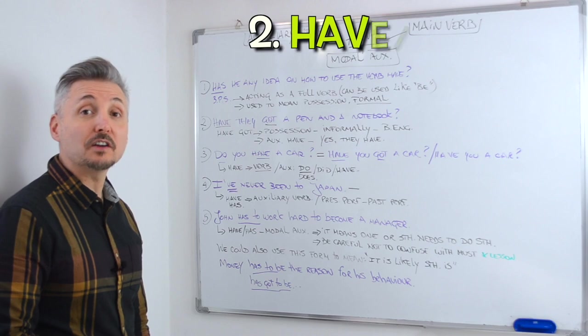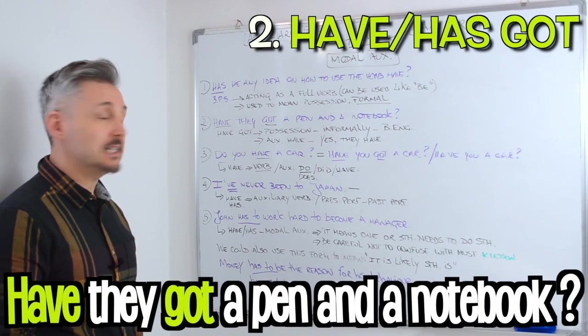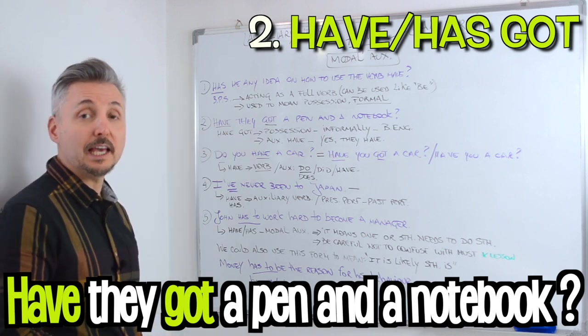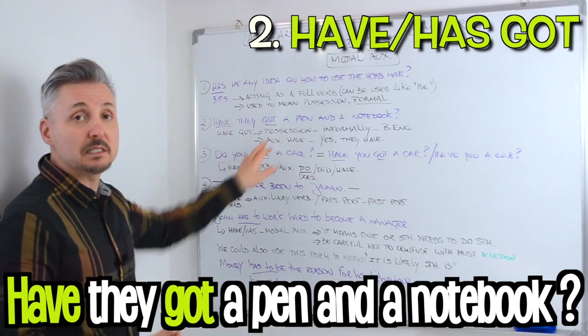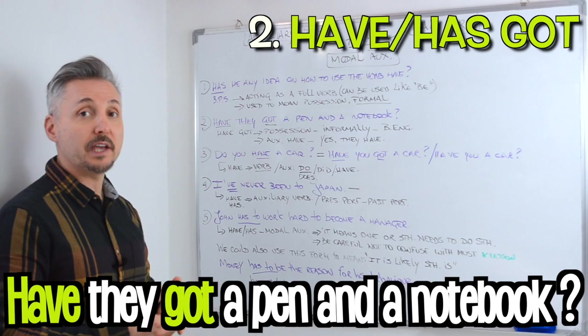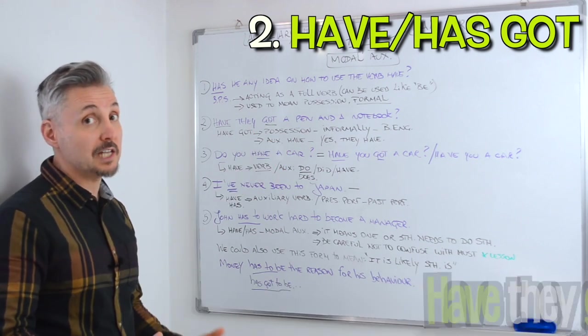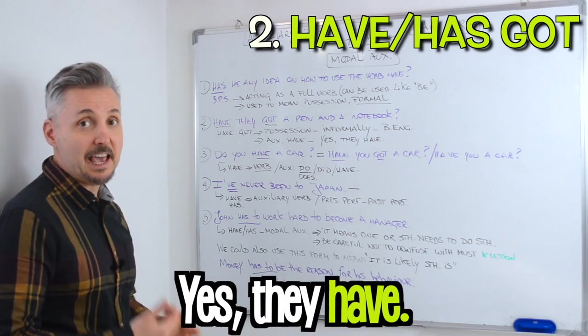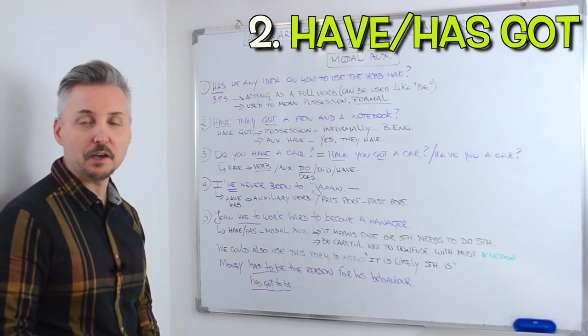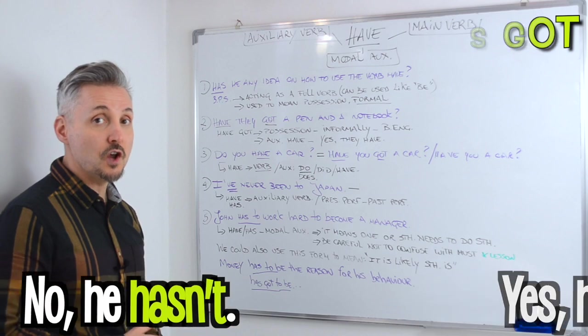Let's take a look at my second example. Have they got a pen and a notebook? In this case we have have got. Have got is used informally in British English, and it means possession. In this case, have is an auxiliary verb. If you had to answer this question, you would answer yes they have or no they haven't. Pay close attention to the third person singular: he, she or it. So, yes he has, no he hasn't.